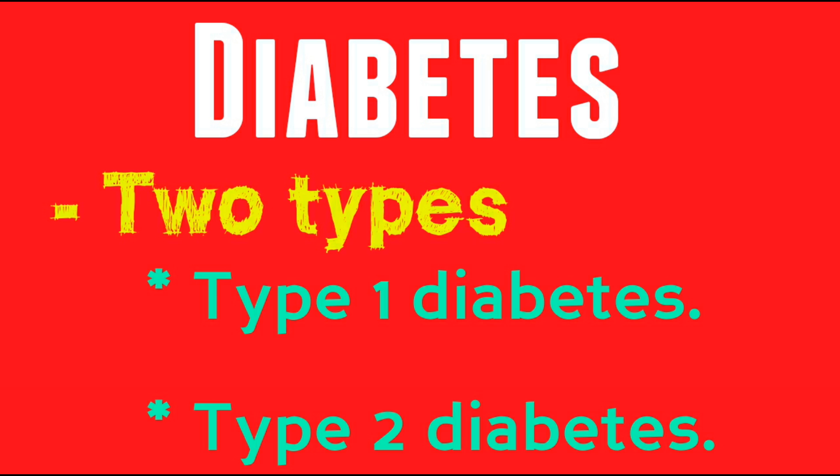Diabetes may be classified into two types: Type 1 diabetes and Type 2 diabetes. In Type 1 diabetes, the body is not able to synthesize enough insulin. In Type 2 diabetes, body cells become insulin resistant, meaning they are not able to use available insulin. We can also classify a third type known as gestational diabetes, which occurs in pregnant women without a previous history of diabetes.